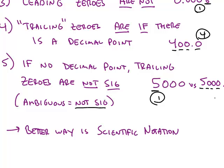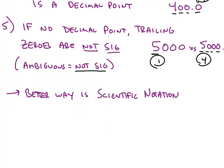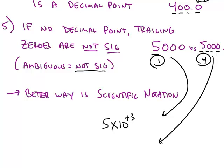So instead of writing normal notation, a better way to write these two would be in scientific notation. 5,000 without a decimal point would be written as 5 times 10 to the positive 3. 5,000 with a decimal point would be written 5.000 times 10 to the positive 3. This shows clearly one sig fig, 5 times 10 to the third. Notice we don't count any sig figs in the 10 or the exponent. 5.000, we maintain four sig figs, the same number of sig figs that we had in the original number.